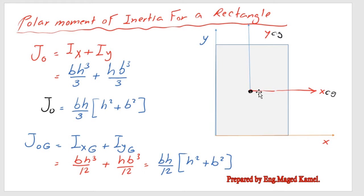And if we would like to get the expression for the polar moment of inertia at the intersection of X_CG and Y_CG, we recall that I_XCG is BH cubed over 12, plus for I_Y passing by the CG equal to H B cubed over 12.